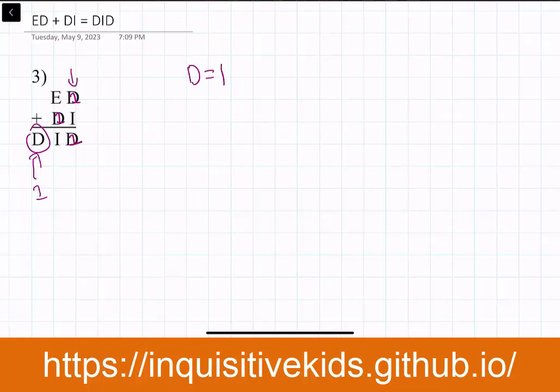In this column, we see something interesting. One plus something equals something that ends also in a one. So this must mean that I is equal to zero, because one plus zero equals one.